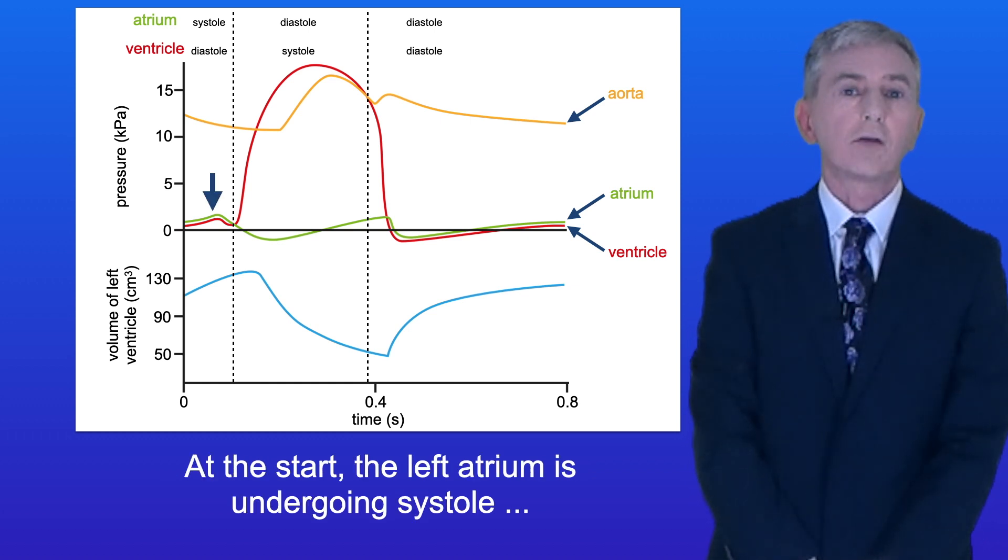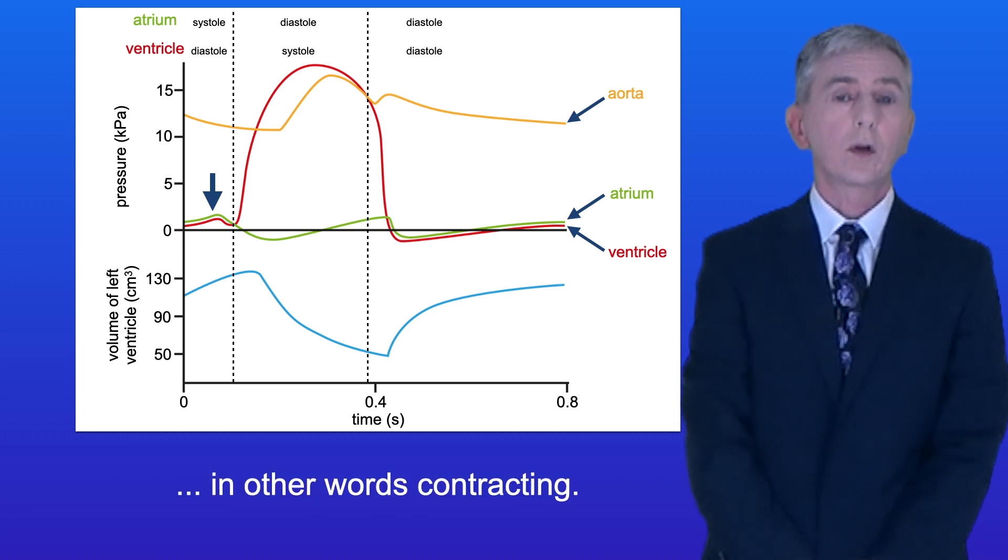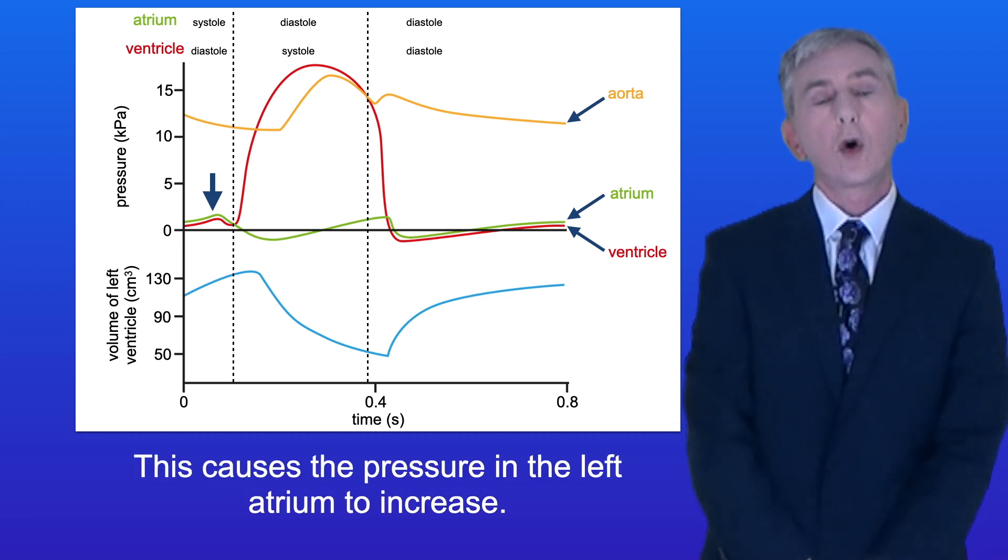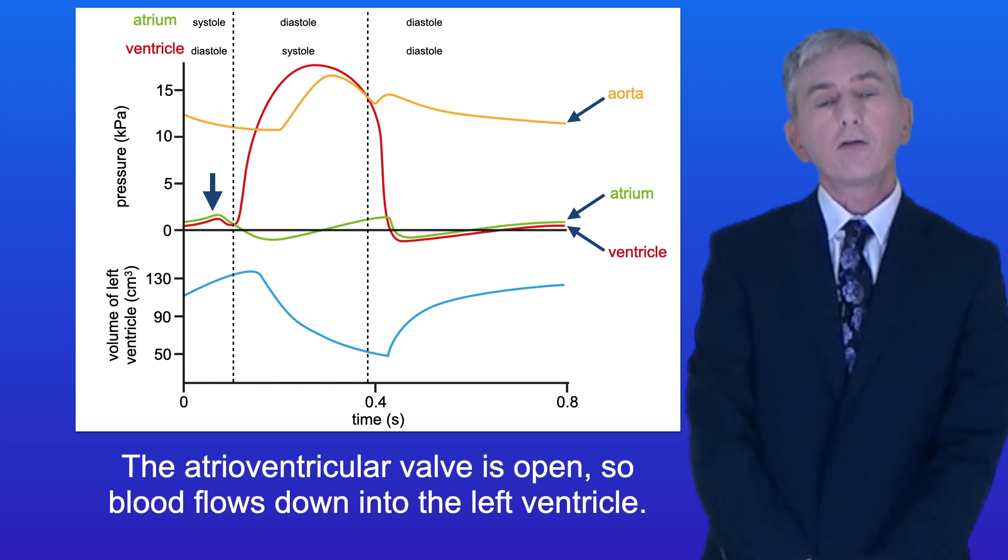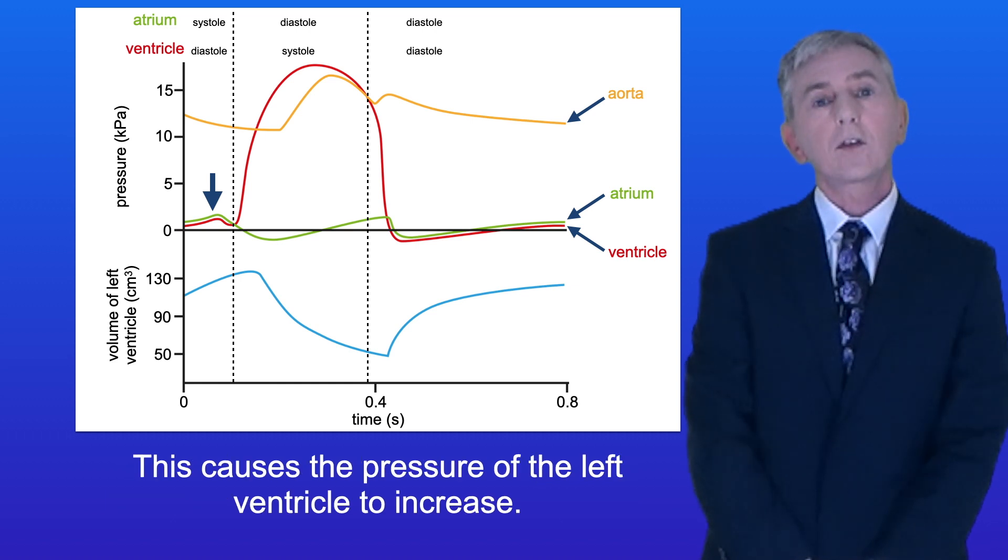At the start the left atrium is undergoing systole, in other words contracting. This causes the pressure in the left atrium to increase. The atrioventricular valve is open so blood flows down into the left ventricle and this causes the pressure of the left ventricle to increase.